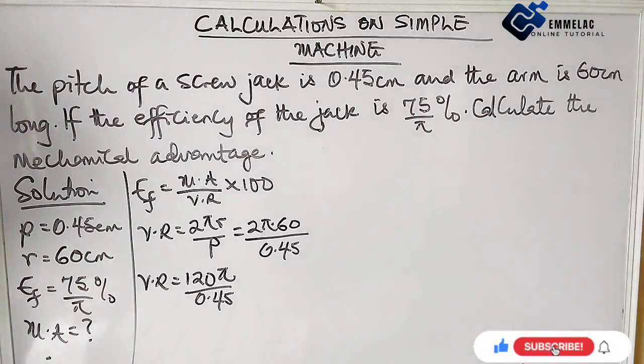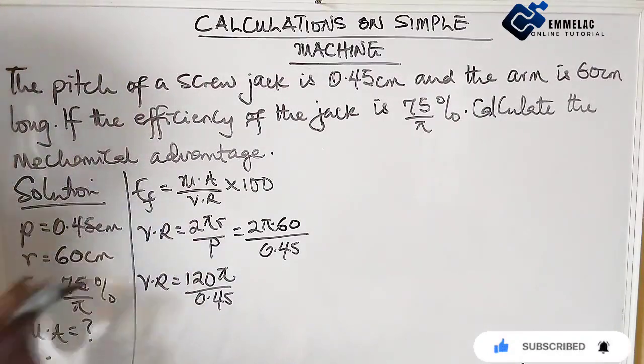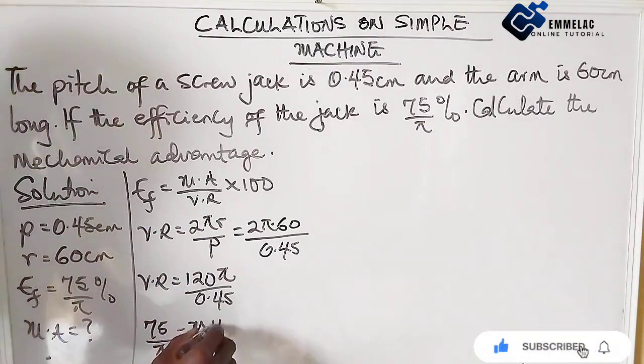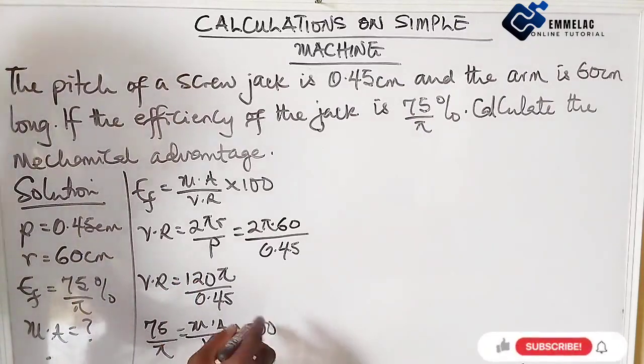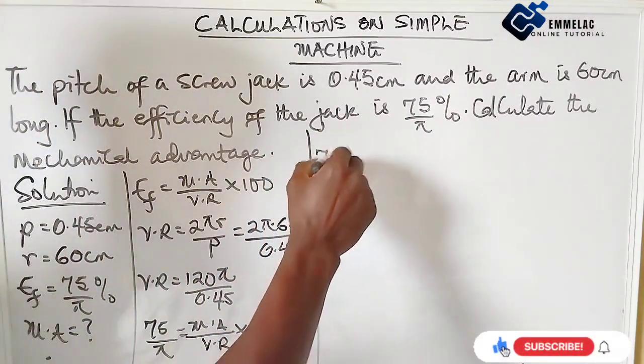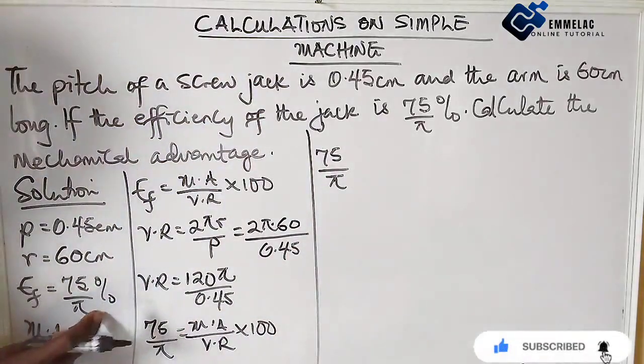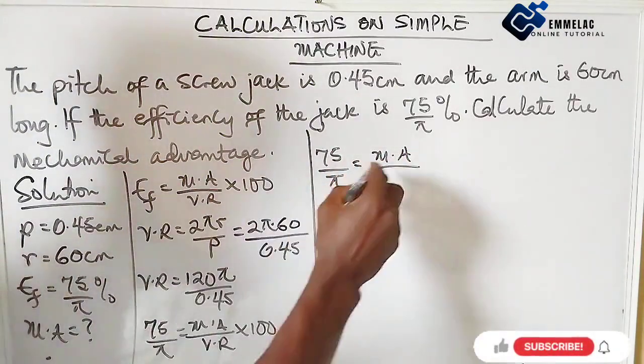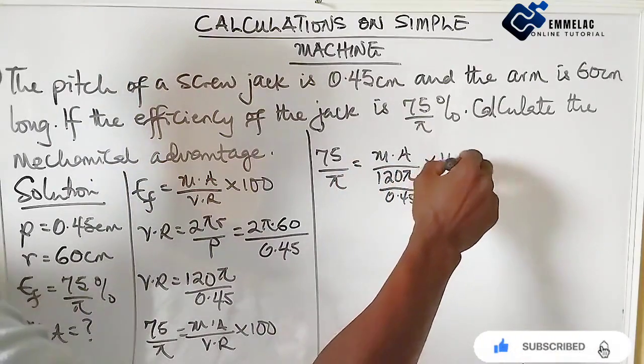So you can see our efficiency is 75 over π, which equals the mechanical advantage, which is what we're looking for, over velocity ratio times 100. Here you have 75 over π. I'll be making use of this 100 here because I don't actually use the percentage.